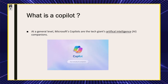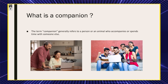Now let's move into what is a copilot. At a general level, Microsoft is describing a copilot as an artificial intelligent companion — it is like an AI friend. In simple terms, Microsoft is saying that if you add all the artificial intelligence to your best friend, colleague, or favorite person, it will act like a copilot.